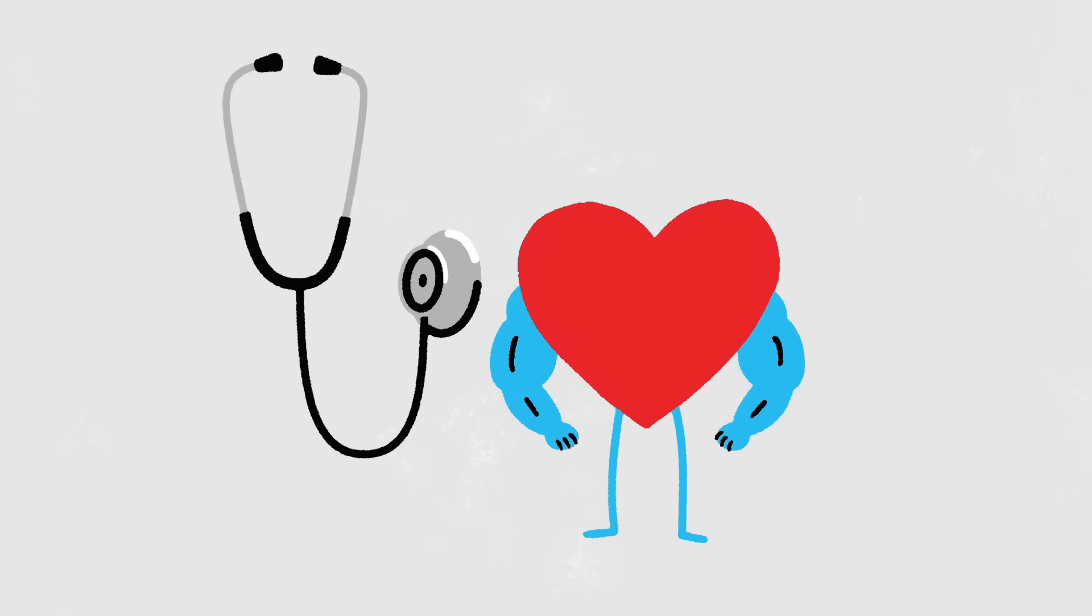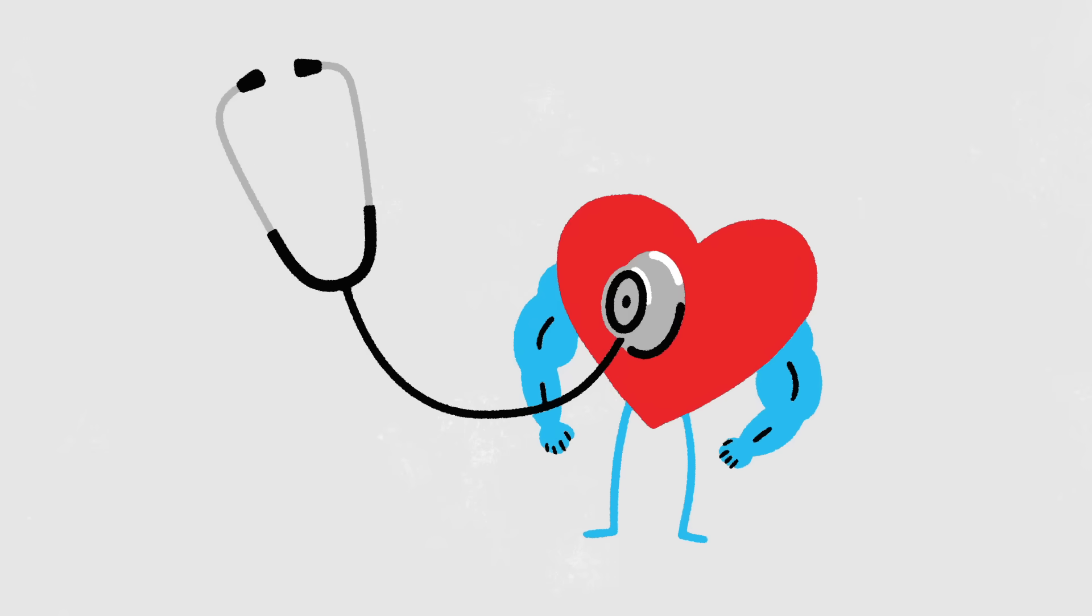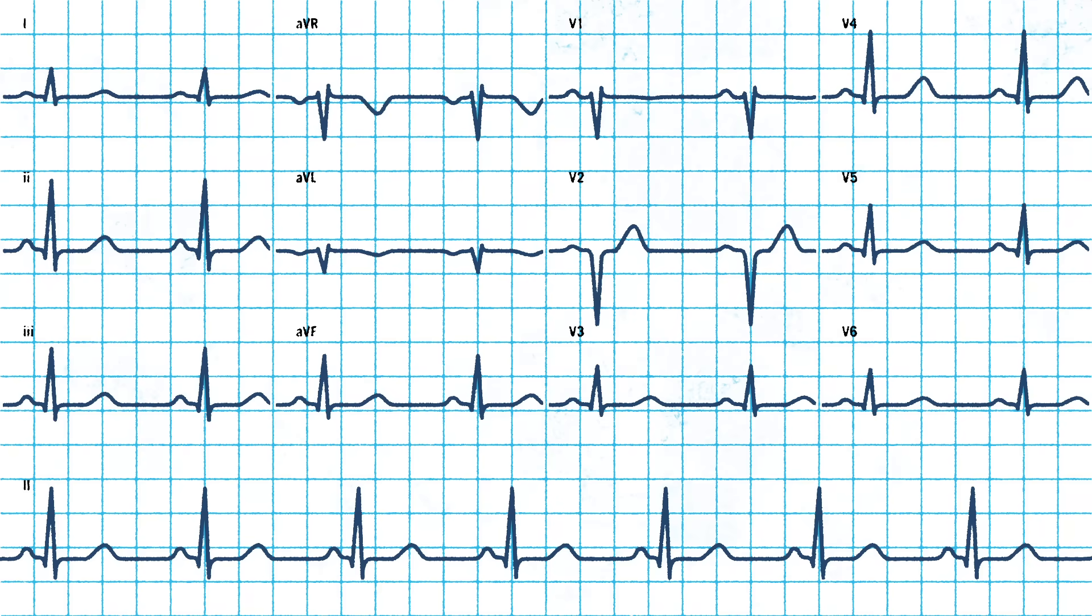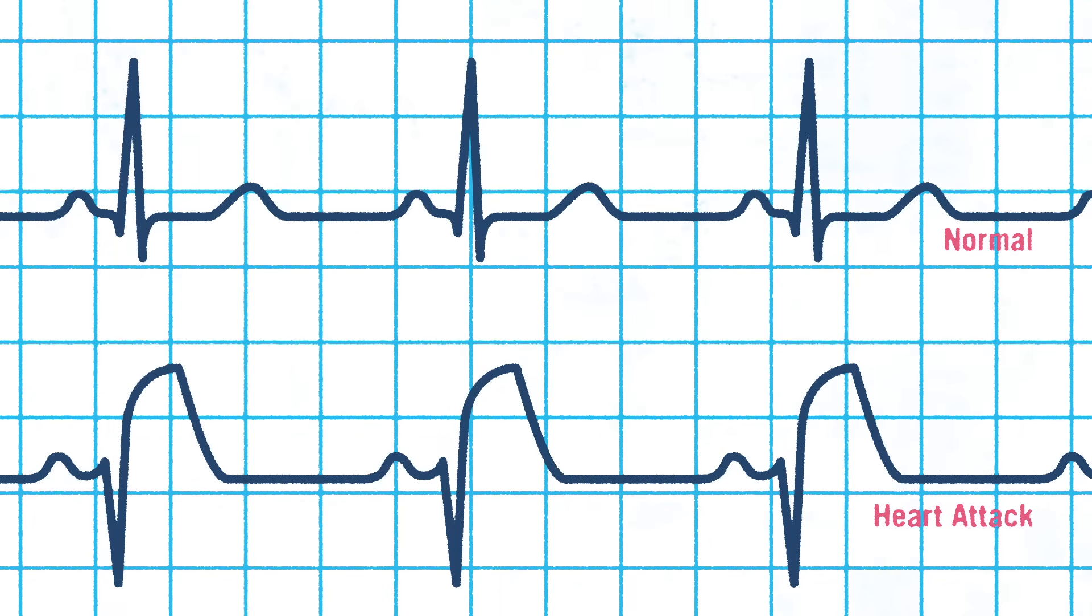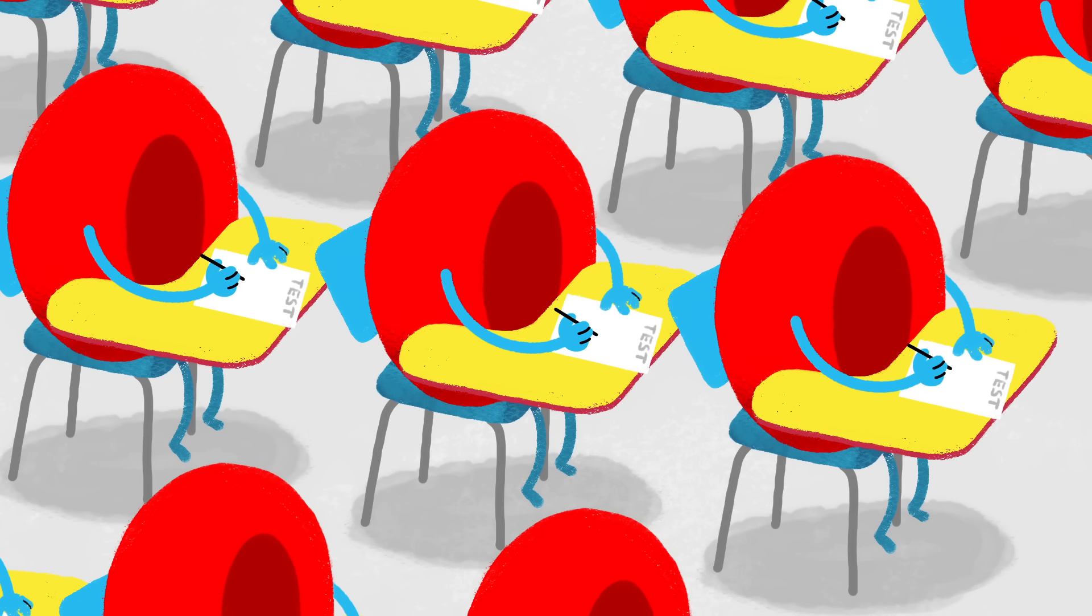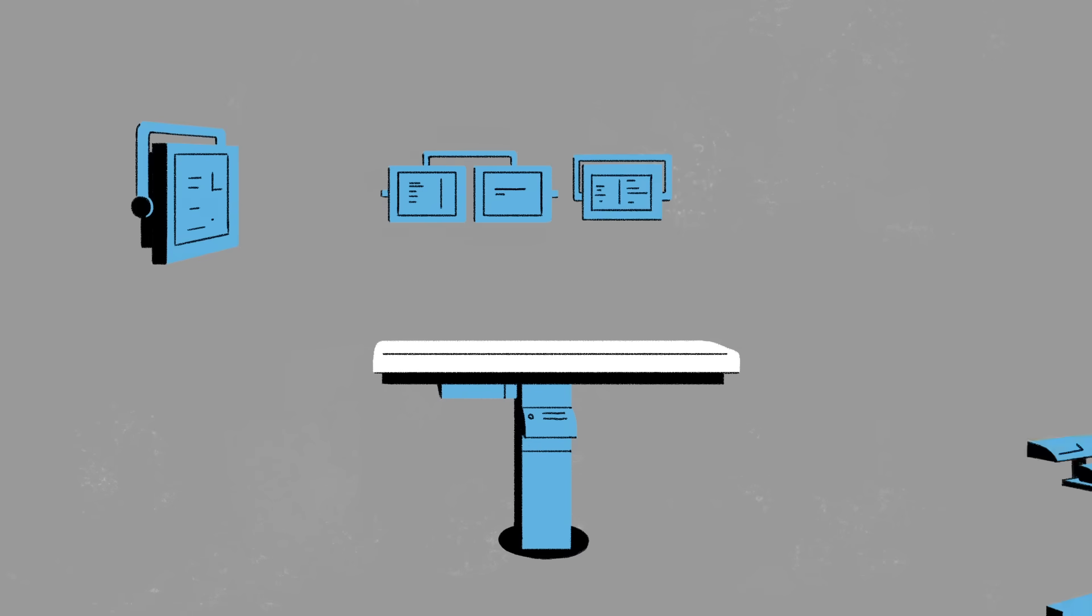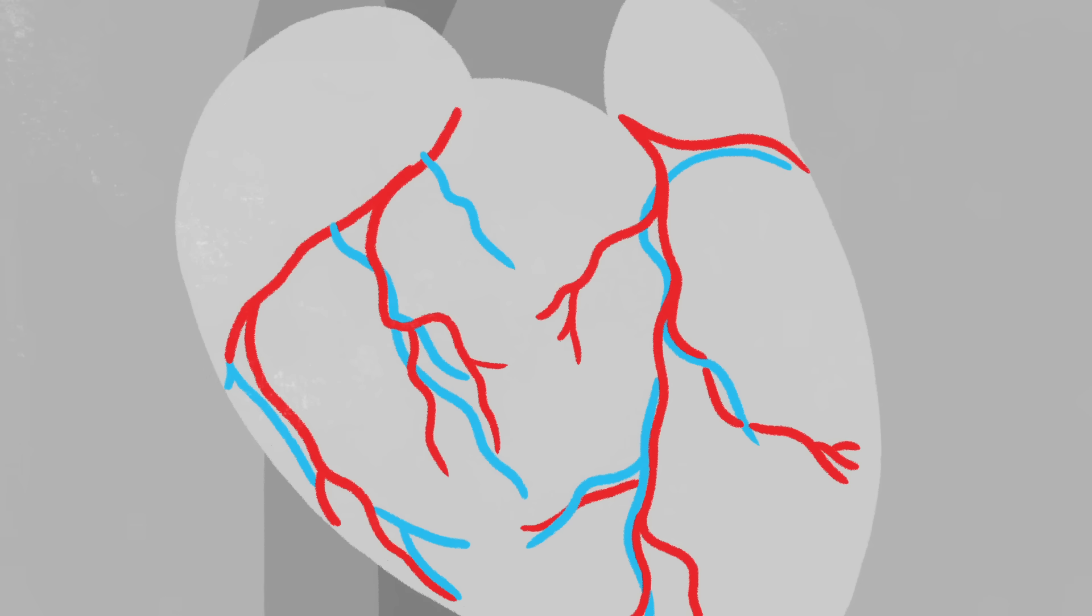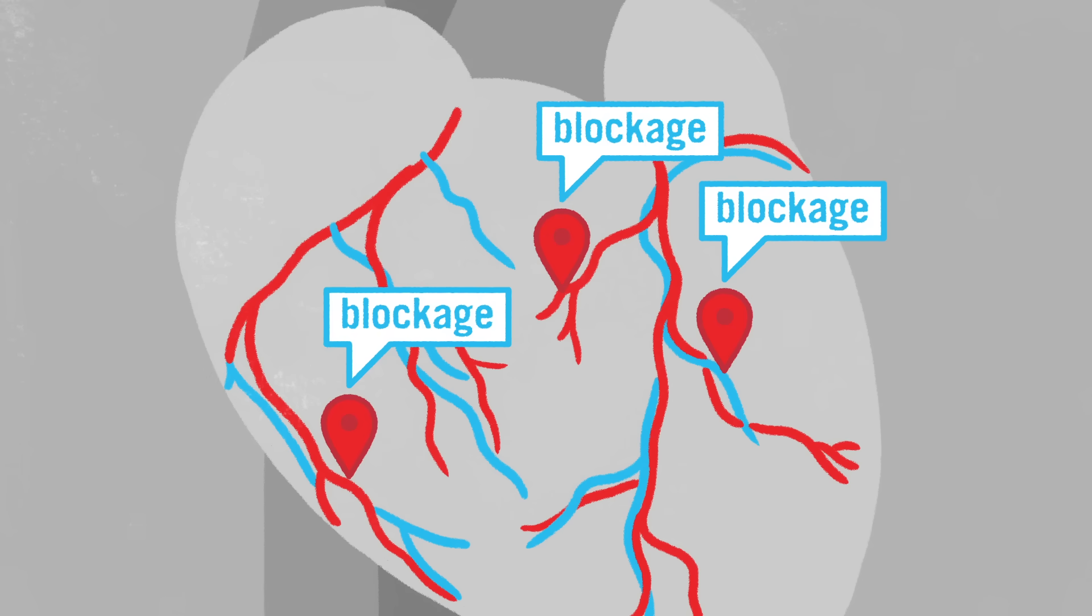In the emergency room, doctors can diagnose a heart attack. They commonly use an electrocardiogram to measure the heart's electrical activity, and a blood test to assess heart muscle damage. The patient is then taken to a high-tech cardiac suite, where tests are done to locate the blockages.